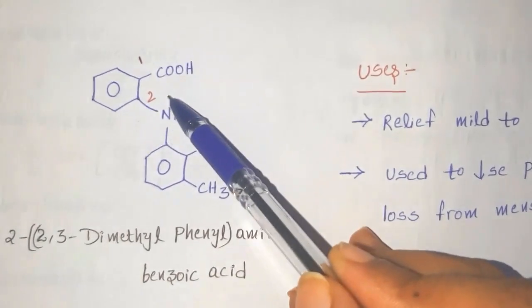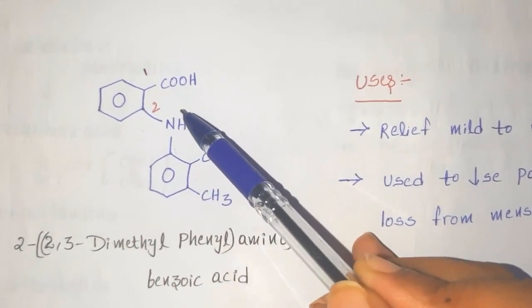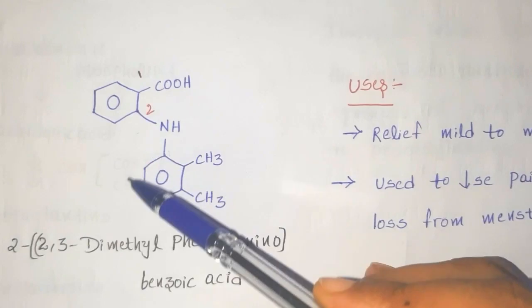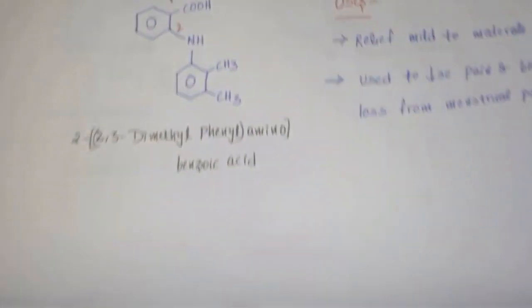And second starting material, I will add hydrogen to the nitrogen, this is NH2. So dimethyl aniline. So second starting material is 2,3-dimethyl aniline.